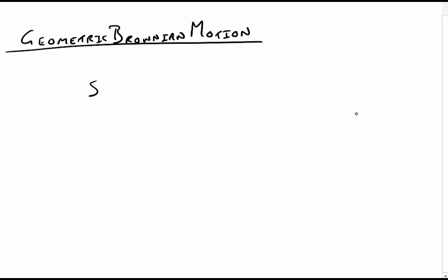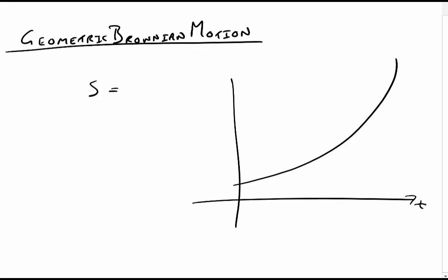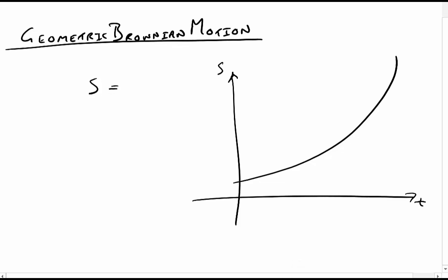We want to come up with this Brownian motion. A share price we would expect to grow in an exponential manner, because if your share price is doubling each time, that's going to follow some kind of exponential graph. So if this is share price against time, it should grow exponentially. This is your start price, S0 — it's going to start at S0 and grow by an exponential factor over time.